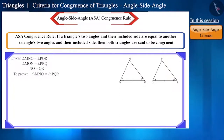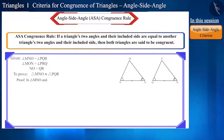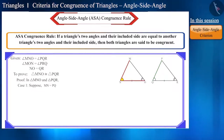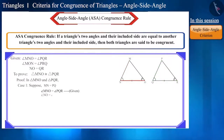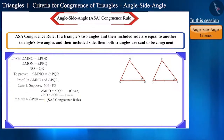If we use the SAS, i.e. side angle side criterion for the congruence of both triangles, then there are three possibilities. First, if we assume that side MN and side PQ are equal, and we are given that angle MNO and angle PQR are equal and sides NO and QR are equal, then both these triangles will be congruent according to the SAS congruence rule.